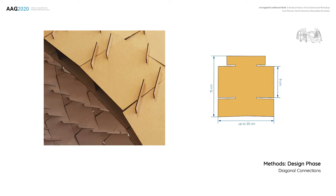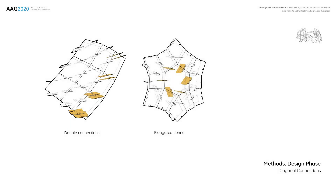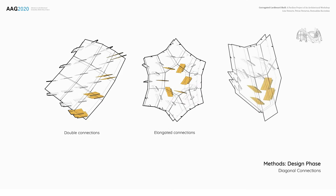There are some variations in the design and application of the diagonal connections. The larger outer arches were stiffened with double connections and longer interior parts. Some other local areas of the structure were strengthened with longer elements, and the supports were reinforced with doubled longer connections and an added third panel.